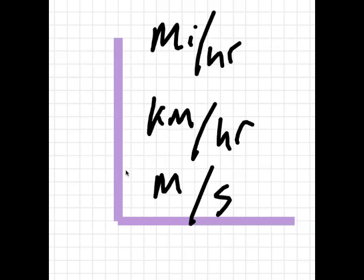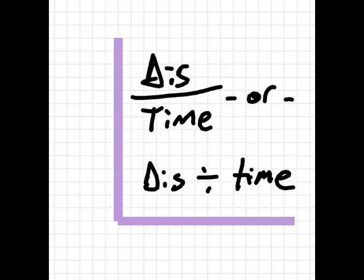You know how people say miles per hour when they talk about how fast a car goes? That's the clue to the math for calculating the speed. Miles per hour, kilometers per hour, meters per second. These are all units for speed.